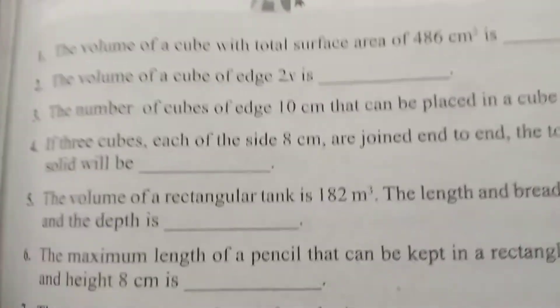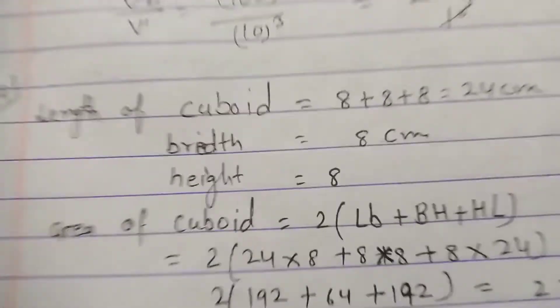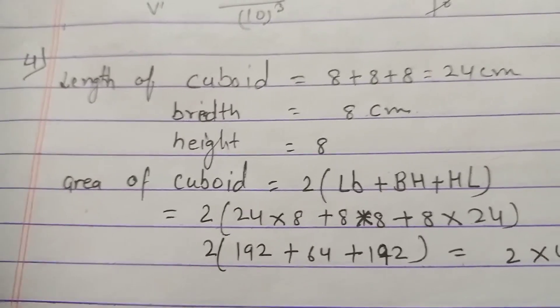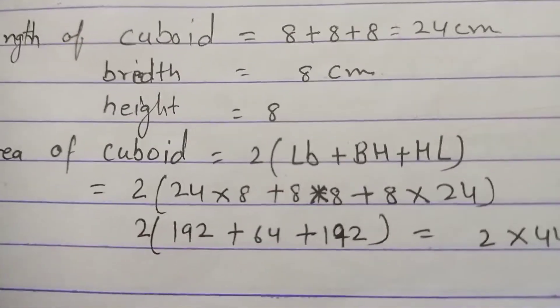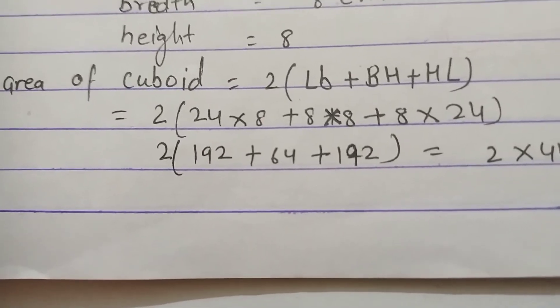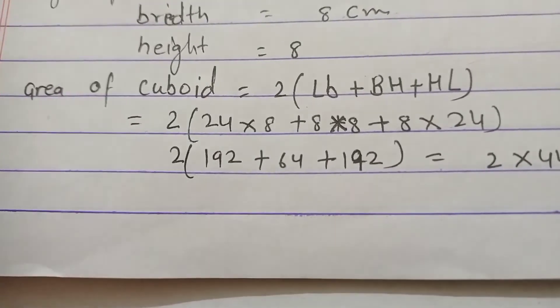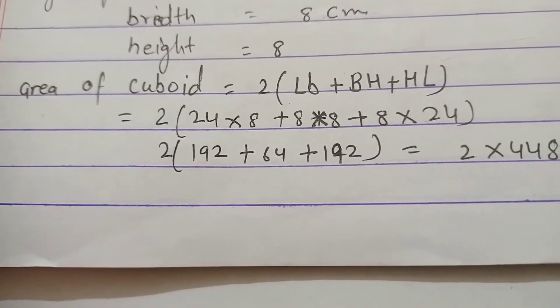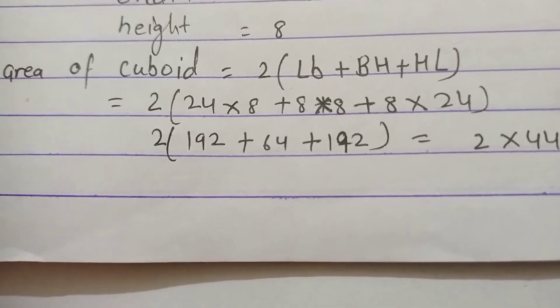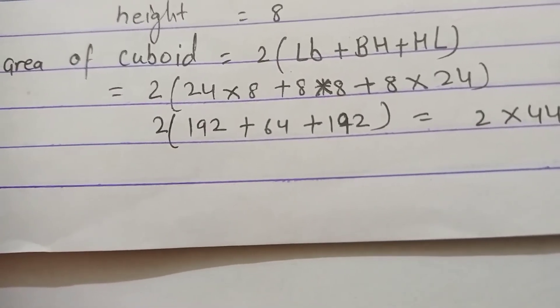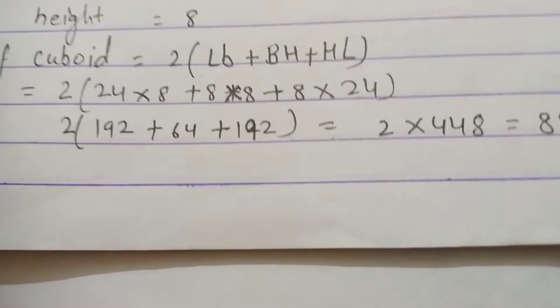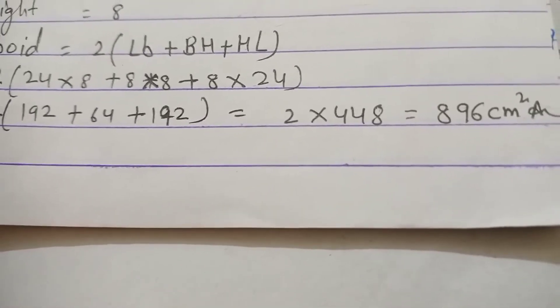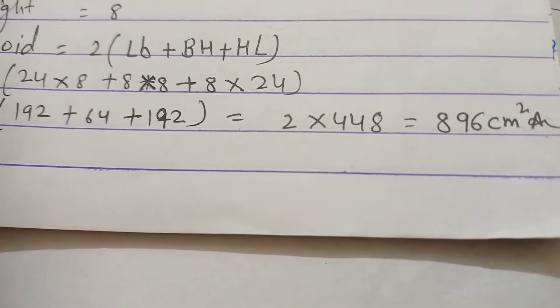Length of cuboid is 8 + 8 + 8 = 24 centimeter, breadth is 8 centimeter, height is 8. Area of cuboid is 2(length×breadth + breadth×height + height×length). So 2(24×8 + 8×8 + 8×24) = 2(192 + 64 + 192) = 2×448 = 896 centimeter square. So the answer is 896 centimeter square.